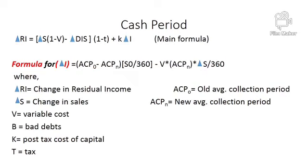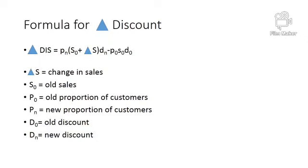The formula for Change in Discount is: Change in Discount = (Pn × Sn × Dn) − (P0 × S0 × D0), where Pn is the new proportion of customers availing the discount, Sn is total new sales (old sales plus change in sales), Dn is the new discount rate, P0 is the old proportion of customers, S0 is old sales, and D0 is the old discount rate. Substituting figures into this formula gives the change in discount.